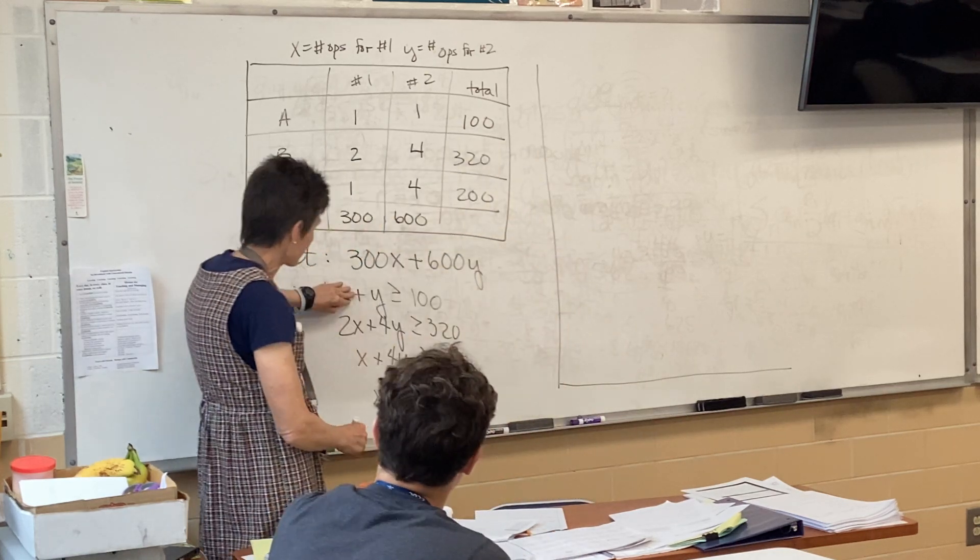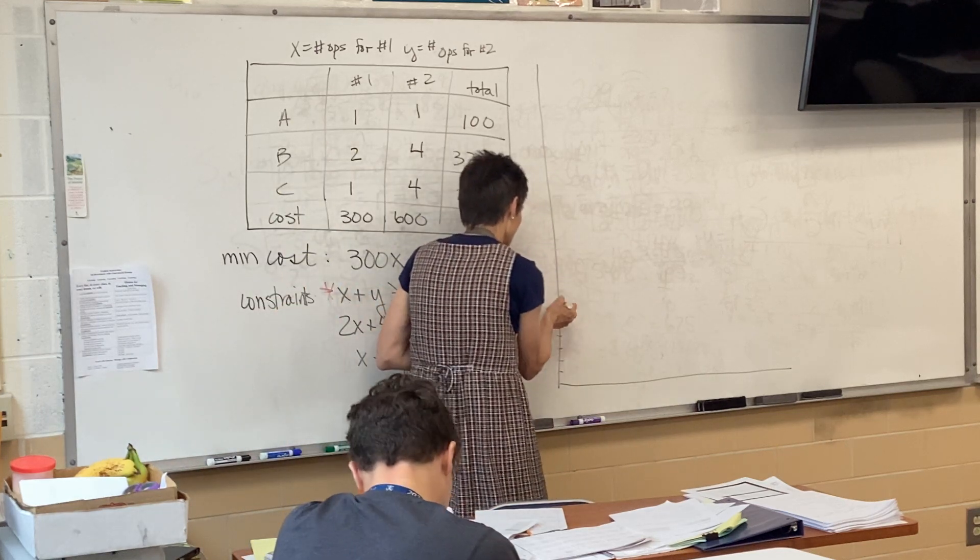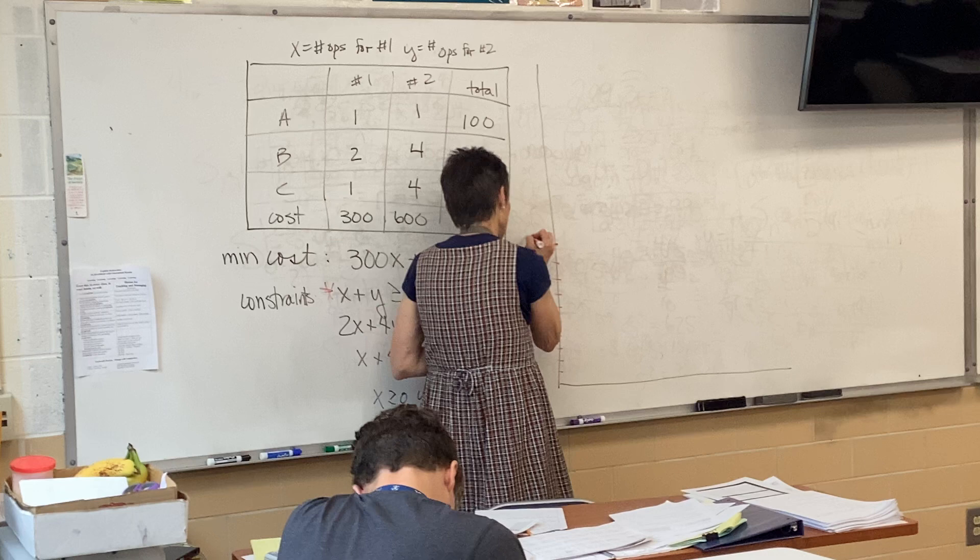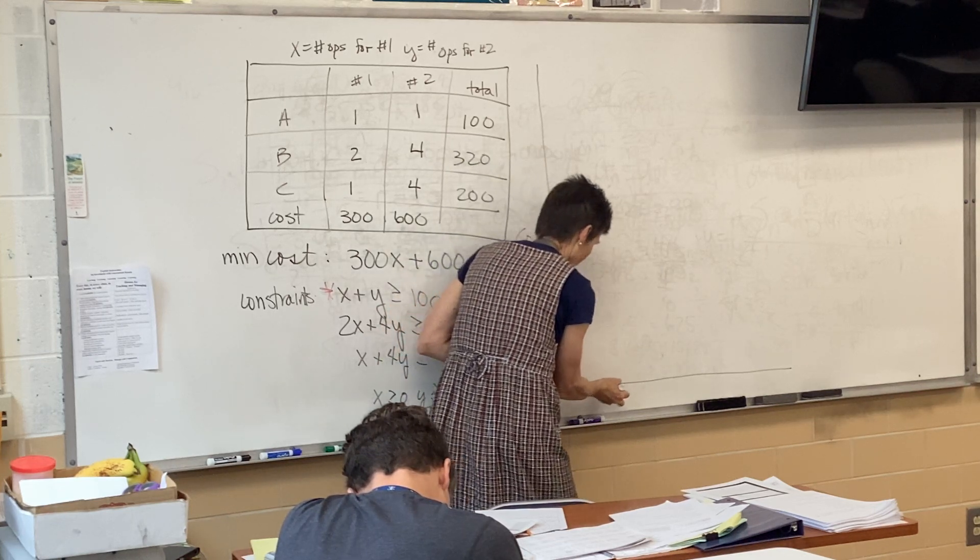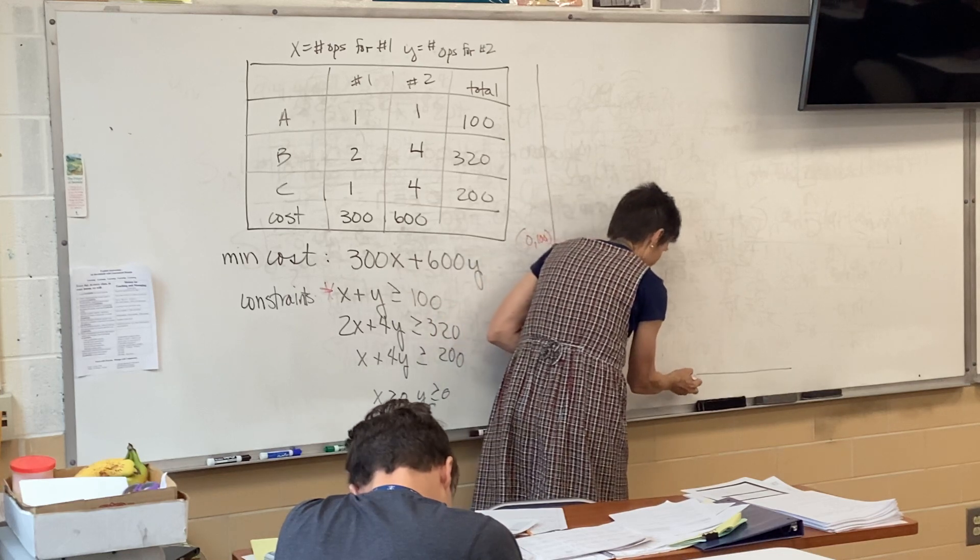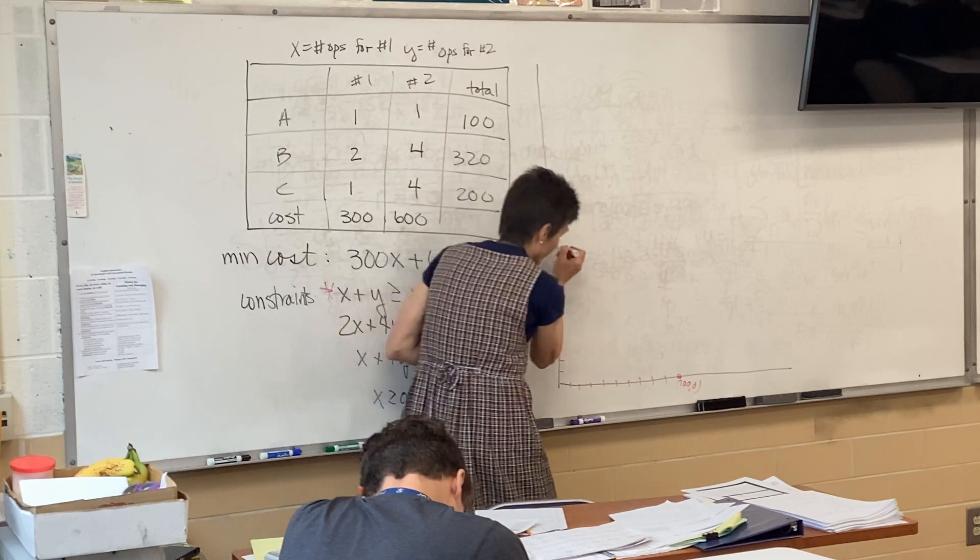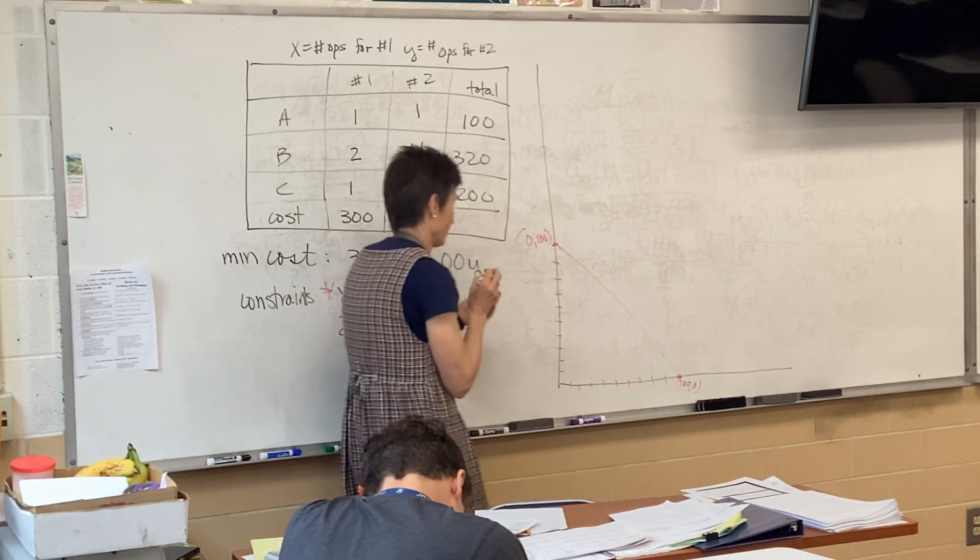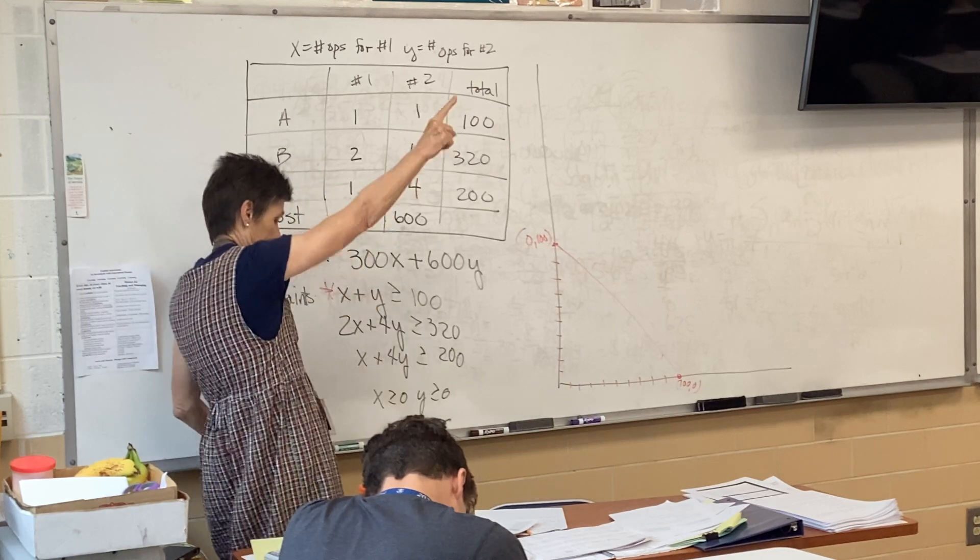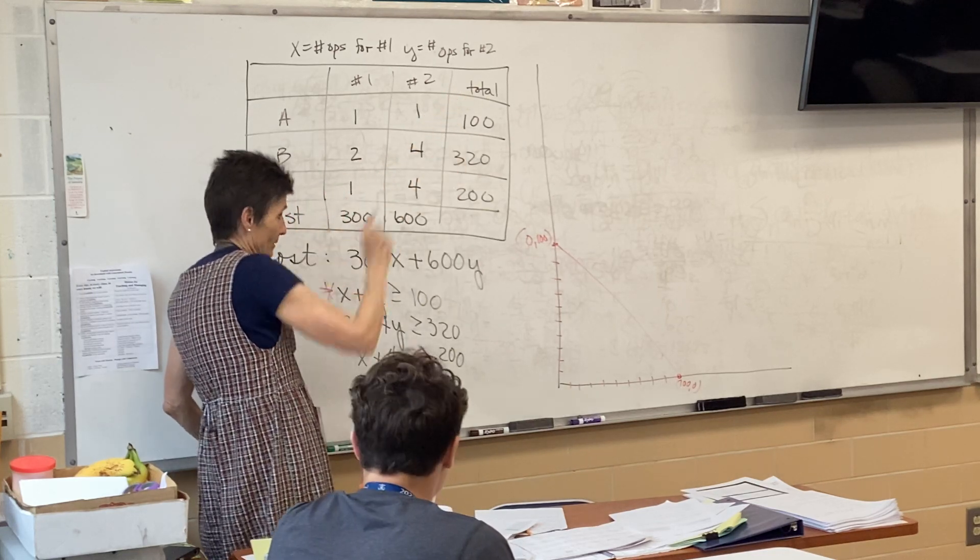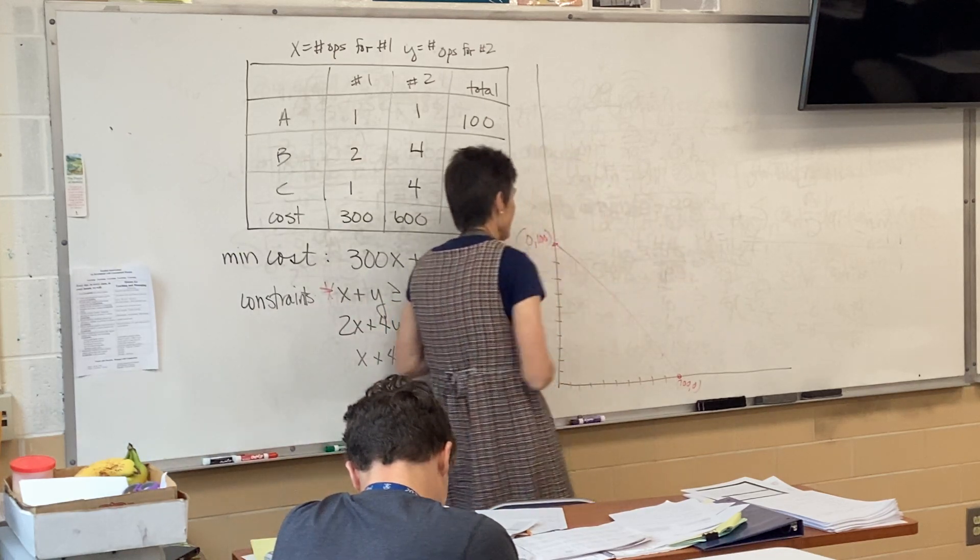So if I cover up x, y will be 100. So 1, 2, 3, 4, 5, 6, 7, 8, 9 is 100. And similarly, x will be 100. 1, 2, 3, 4, 5, 6, 7, 8, 9 is 100. And where's that guy shaded? That way, right? So we're not looking at the triangle. We're looking at all this space out here.